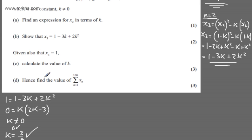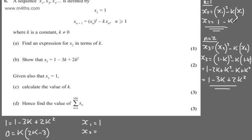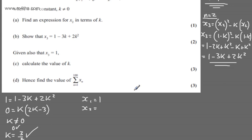In part (d), for 3 marks, we need to find the sum from n = 1 to 100 of x_n. We already have x₁ = 1. Looking at x₂ using our earlier expression, x₂ = 1 - k = 1 - 3/2 = -1/2. We know x₃ = 1, and we could also look at x₄ to see the pattern continue.